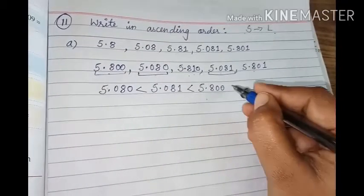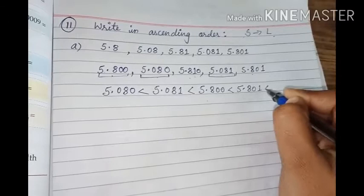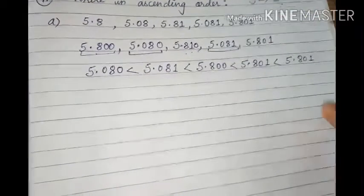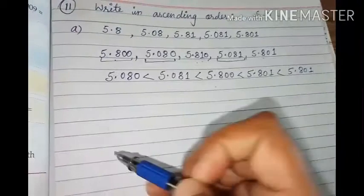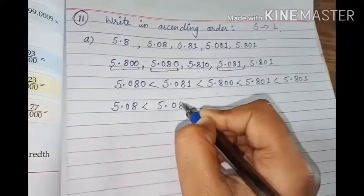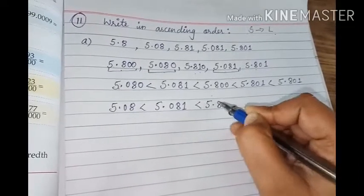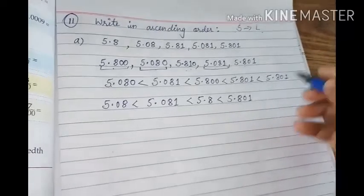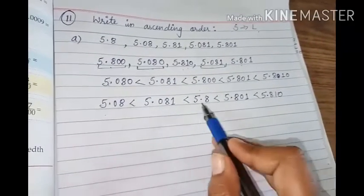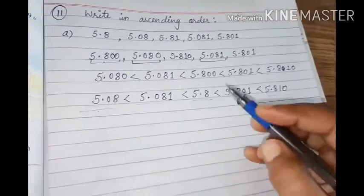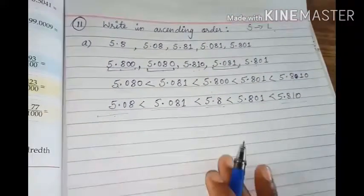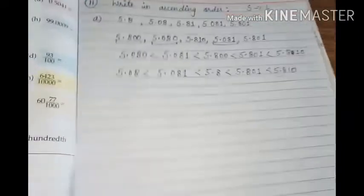Then 801 and 810, 801 is the smallest number. And then we have last 5.801, which is the greatest in all. What can happen after this? That whatever 5 numbers you have, you can arrange them in the format. 5.08 is given as 5.08 only, and this is 5.081. Now you can see how many differences are in the questions.